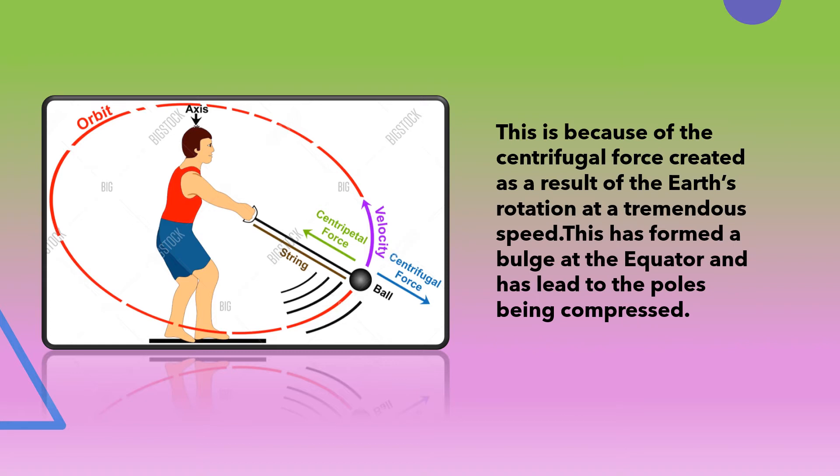The pebble, being very heavy, is thrown outwards in a circular motion, which is exactly what happens when the Earth is rotating at tremendous speed. The centrifugal force acting on it makes the Earth bulge at the equator and flatten at the poles.